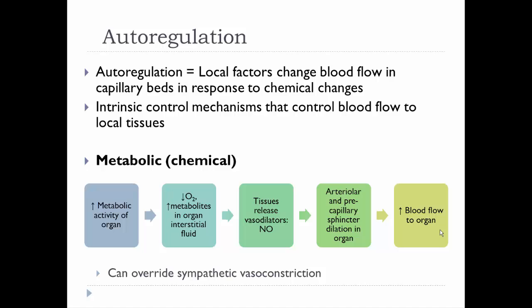This is such an important local control that it can actually override the sympathetic nervous system's desire for vasoconstriction. Even though the sympathetic nervous system wants to vasoconstrict blood vessels — say to the digestive tract — if it attempts to vasoconstrict to your skeletal muscles, the high demand for oxygen, resulting in low oxygen levels, is actually going to override that sympathetic input and still cause those blood vessels to dilate.